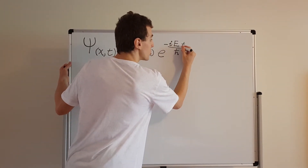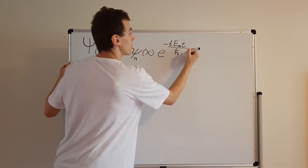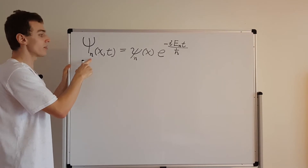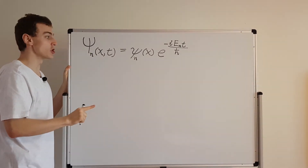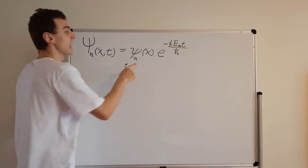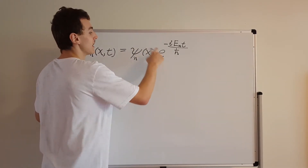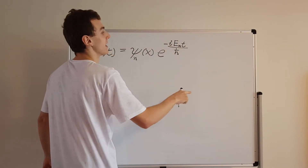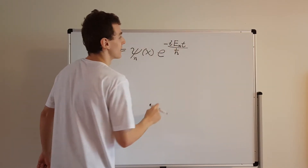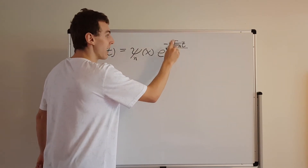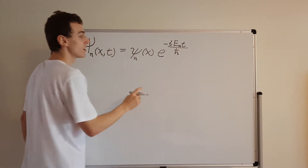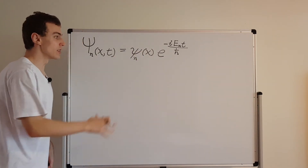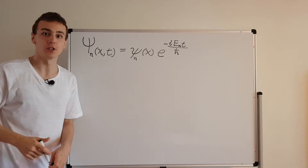Each solution is going to be associated with an allowed energy, and that energy I'm also going to label with index n. So the nth separable solution to the Schrödinger equation is a product of the nth solution to the time-independent Schrödinger equation and the exponential factor that keeps track of that energy En — the nth allowed energy associated with the nth solution ψ_n(x).